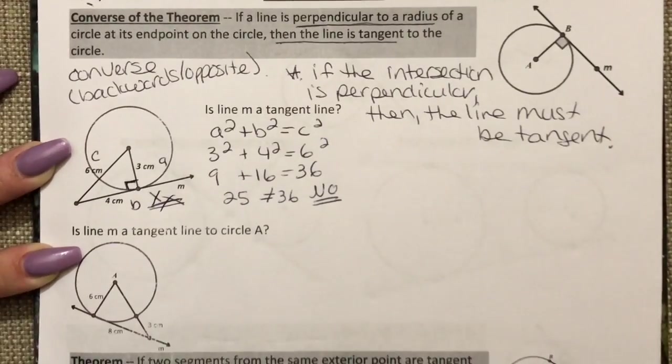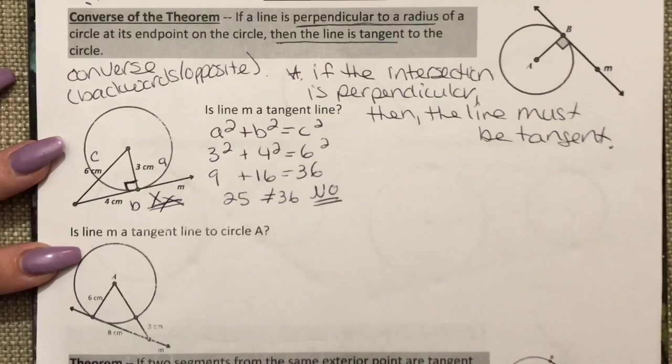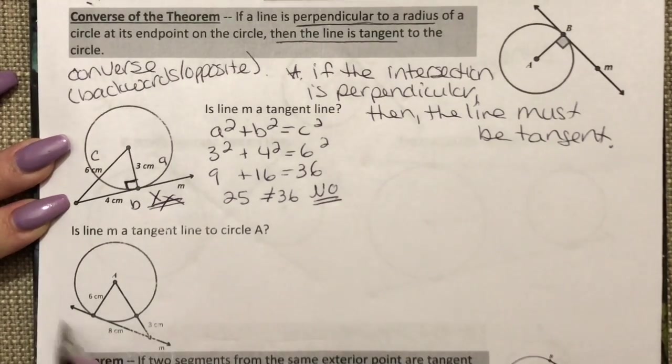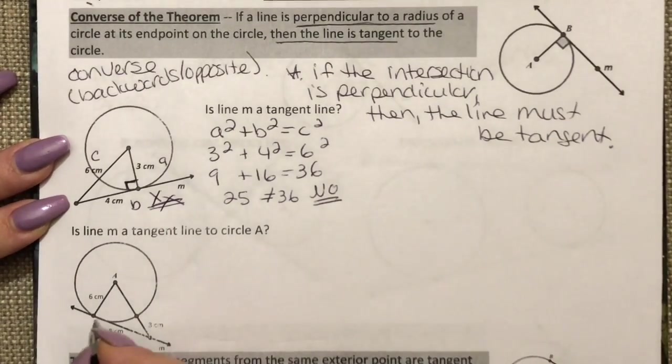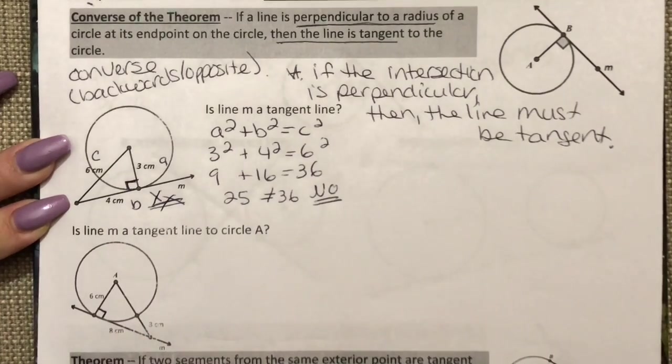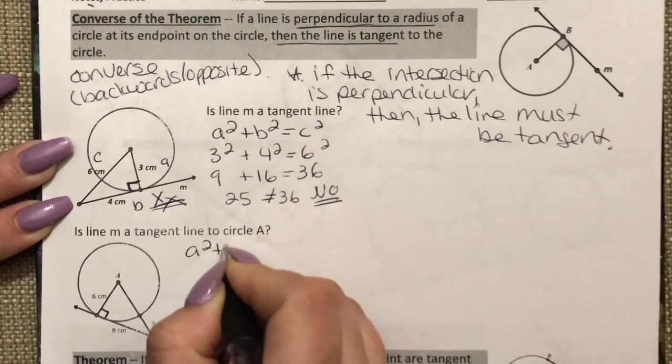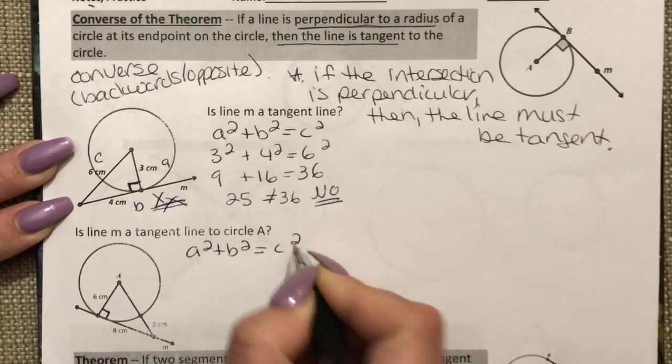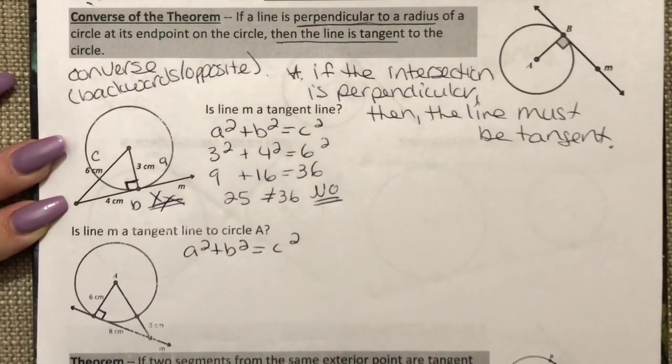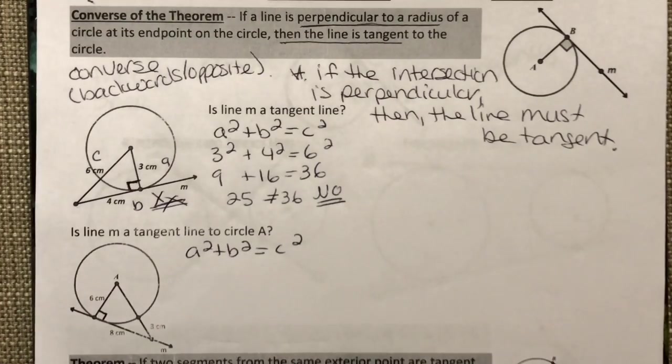So we're going to try it again with the next one. If this line is tangent then this should be a perpendicular intersection, which again means that my A squared plus B squared equals C squared should work. And if it doesn't that just means no, the line is not tangent.